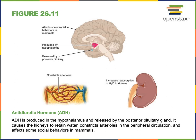Antidiuretic hormone is produced in the hypothalamus and released by the posterior pituitary gland, then it travels through the blood to reach target cells in the kidney as well as in the arterioles — the small arteries that carry blood into capillaries. In the arterioles, antidiuretic hormone stimulates vasoconstriction: the smooth muscle in the wall of the blood vessel contracts, which has the effect of increasing blood pressure. A synonym for antidiuretic hormone is vasopressin, and the name vasopressin comes from this effect of increasing blood pressure by stimulating contraction of arterioles.